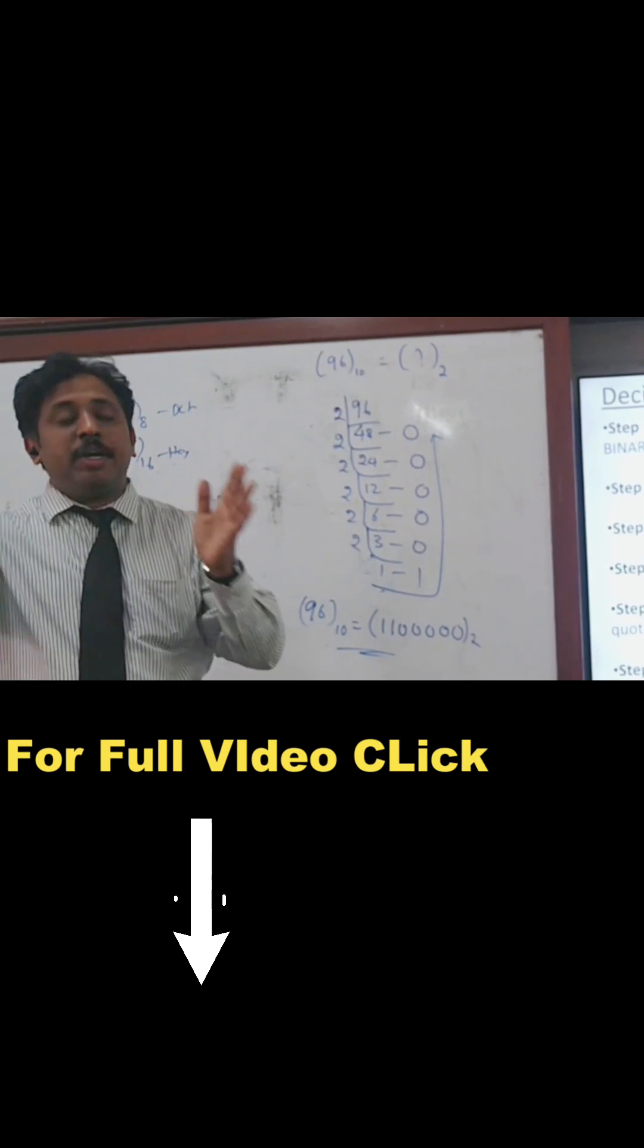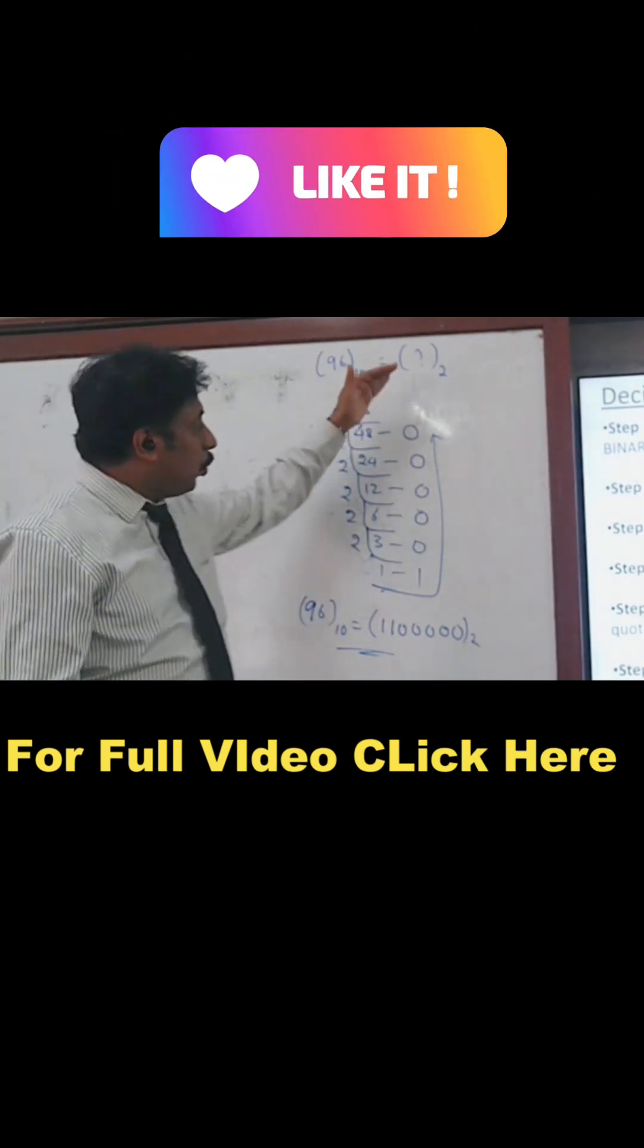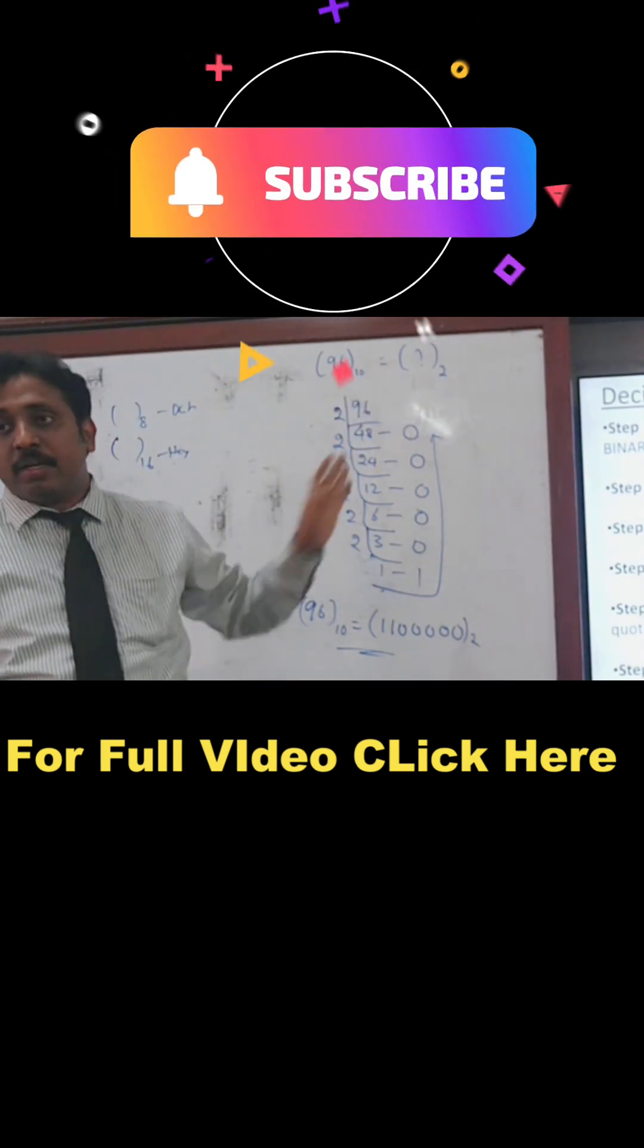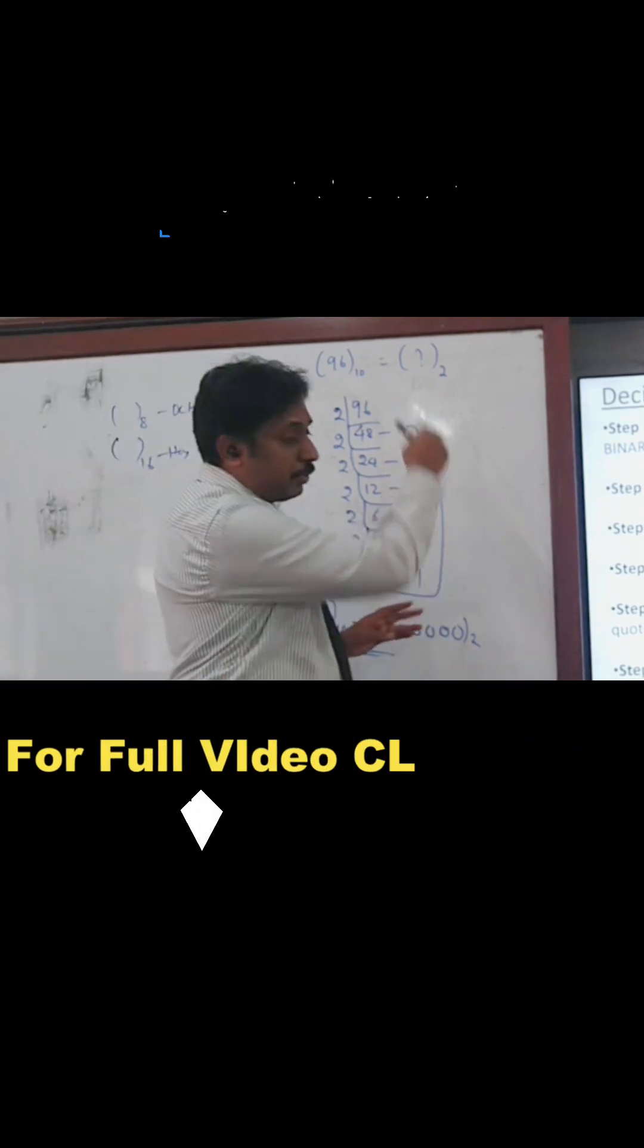Take the number, divide by 2, write the remainder. Once the quotient gets below the divisor, stop there.